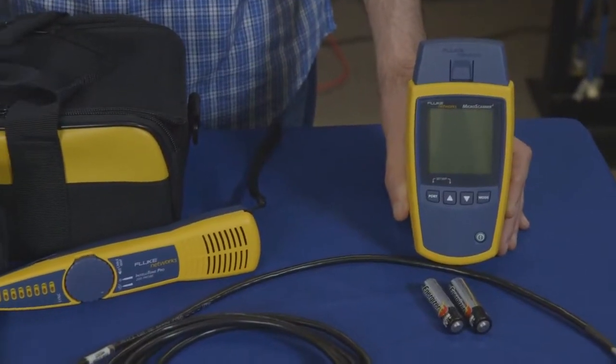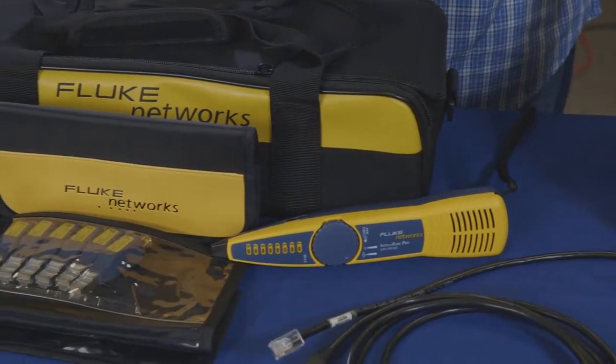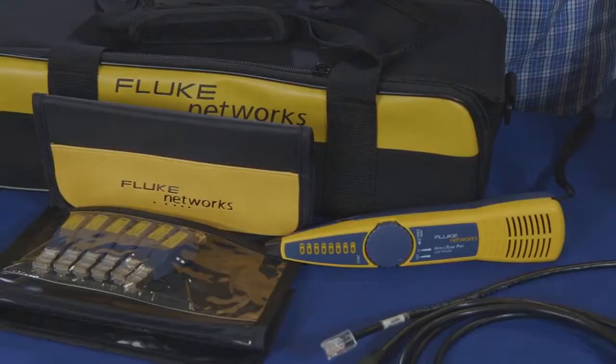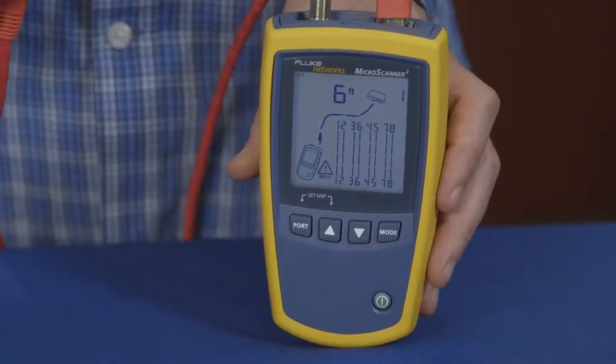Using the Microscanner 2, you'll be able to easily locate cables and identify the distance to various cable faults. Here's an example of using the wire map adapter on a bad patch cord.